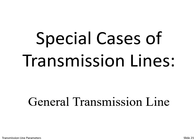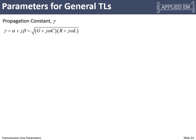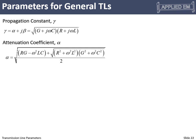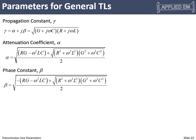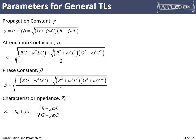Now let's talk about special cases of transmission lines. The first is the general transmission line — everything we've just discussed. Summarized in one place: the propagation constant γ = √[(R + jωL)(G + jωC)] fell out of the wave equation derivation; the attenuation coefficient α and phase constant β were derived from it in terms of R, L, G, and C, where α consolidates all loss information and β consolidates speed and oscillation information; and the characteristic impedance is Z₀ = √[(R + jωL)/(G + jωC)].